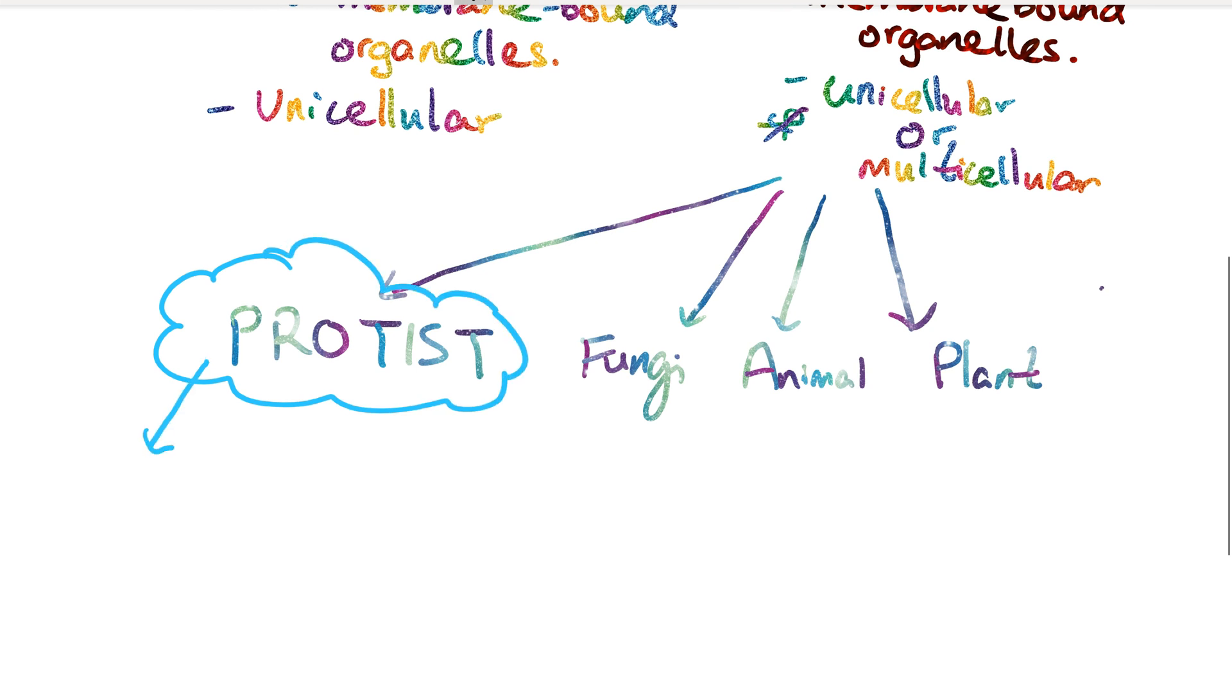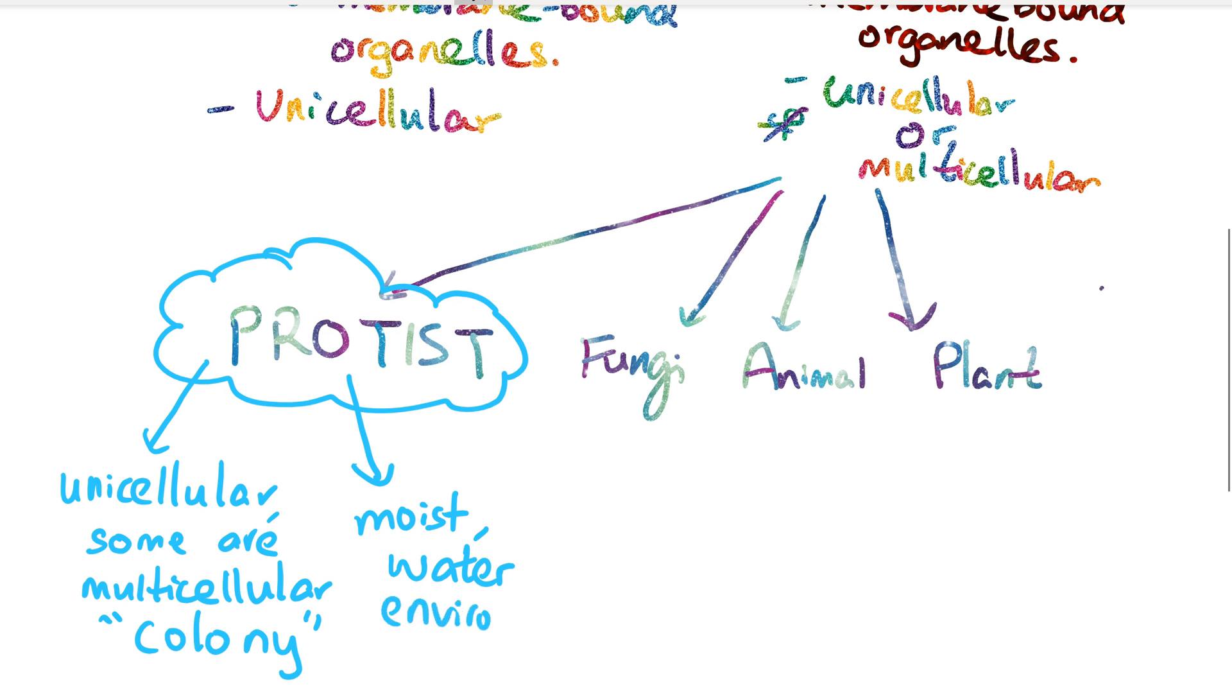Protists are mostly unicellular organisms made out of one cell only. However, some are multicellular and live together as a colony. Protists usually can be found in moist or water regions such as pond water. If you get pond water and put it under a microscope, you'll be able to find these tiny organisms.